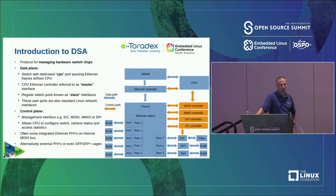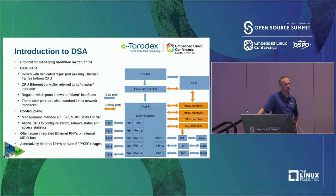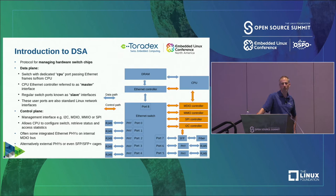DSA is basically a protocol for managing switch chips. A regular PC or embedded board usually has an Ethernet controller, but as soon as you have more than one port, usually there is not a set of separate controllers but rather some kind of switch fabric or Ethernet switch chip. That is basically what DSA helps us to manage. One basically differentiates between data plane and control plane. The data plane is where the regular data flows through your switch. Usually you have a CPU port that allows the control processor or SOC to receive some of the data — for certain protocols you might want to analyze those packets.